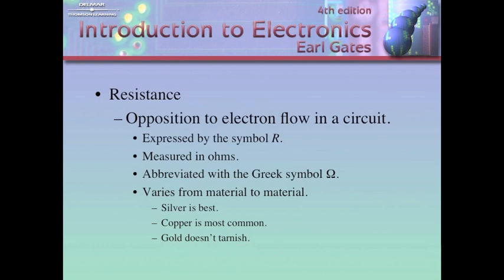The property of resistance is the opposition to electron flow in a circuit. When current encounters opposition, we call that opposition resistance. It's going to be expressed by the symbol capital R. It's going to be measured in ohms, and abbreviated with the Greek symbol omega. It's going to vary from material to material. Silver is the best — meaning it has the least amount of resistance. Copper is the most common, because copper is the cheapest material that has the least amount of resistance. And gold makes the list because it doesn't tarnish. When copper and silver tarnish, they oxidize, and that oxide layer is a high level of resistance, which isn't good for a circuit.